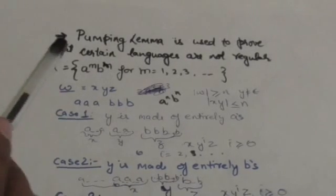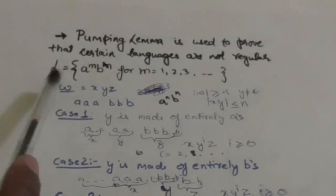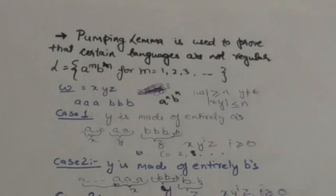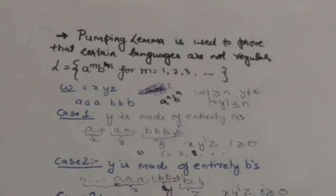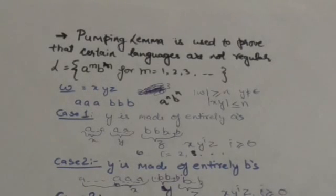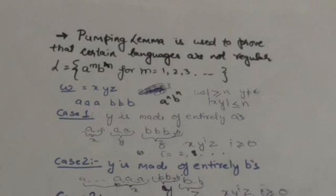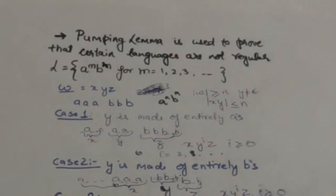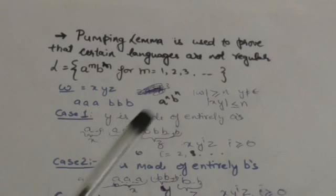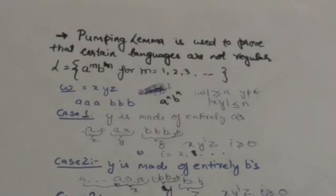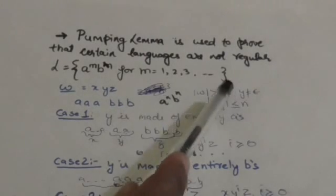We are given the language L which is the set of strings of the form a^m b^m where m is greater than or equal to 1. We have to prove that this language is not a regular language. First, I have assumed that this is a regular language. Then I have chosen a constant n, which will be the number of states of the finite automata that would accept this language.